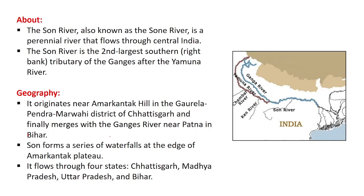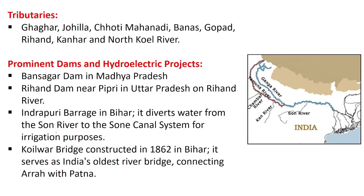The Sone has a series of waterfalls at the edge of the Amarkandak Plateau. It flows through four states: Chhattisgarh, Madhya Pradesh, Uttar Pradesh, and Bihar. The tributaries of the Sone River include the Gagar, Johila, Chhoti Mahanadi, Banas, Gopad, Rihand, Kanhar, and North Koel River.